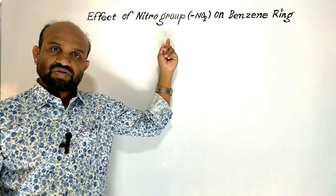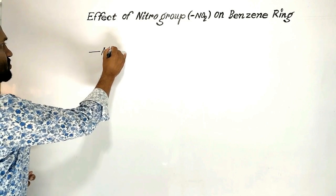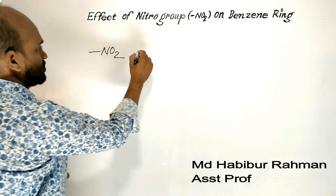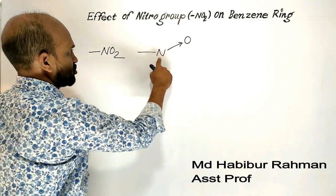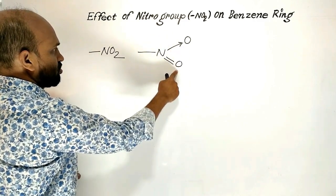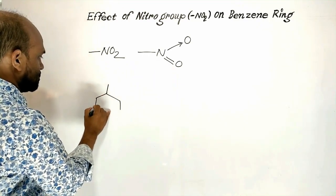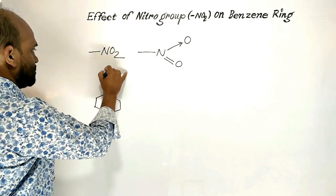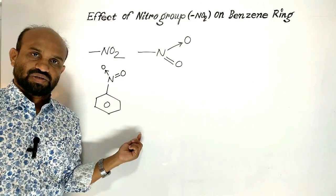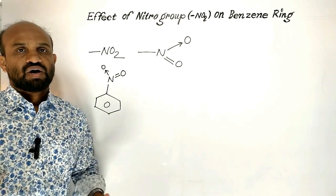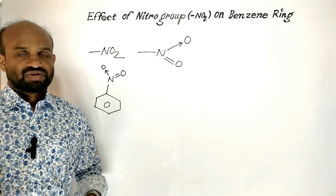Today's lesson: effect of nitro group on benzene ring. Let's see the structural formula of nitro group. This is the molecular formula of nitro group. There is a coordinate covalent bond between nitrogen and oxygen, and a nitrogen-oxygen double bond. This is the structural formula of nitro group. When nitro group is on the benzene ring, the effect of nitro group on benzene ring in nitrobenzene is demonstrated through resonance structures.